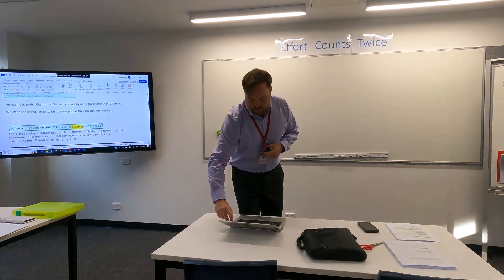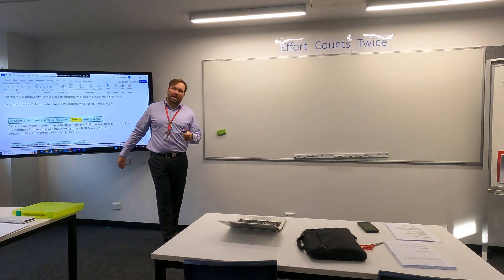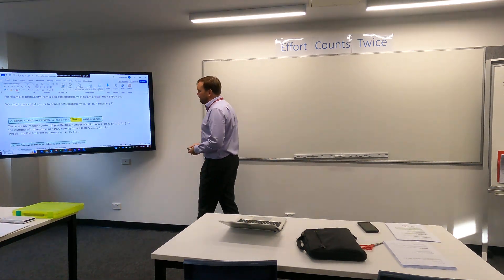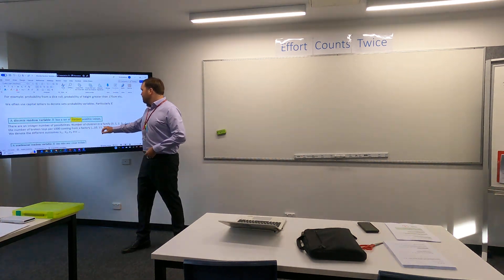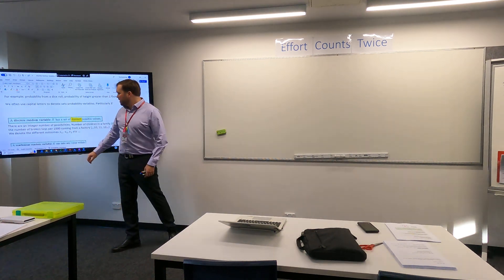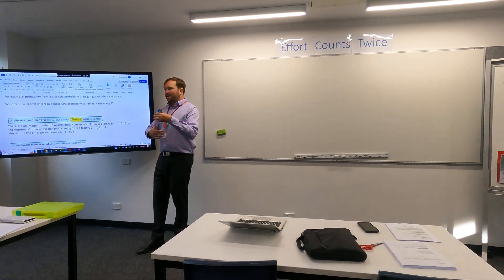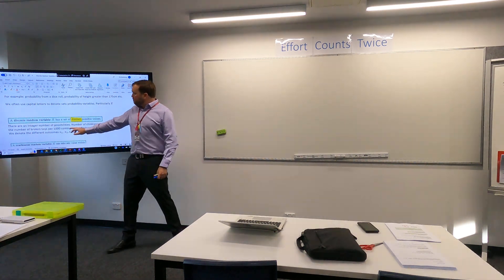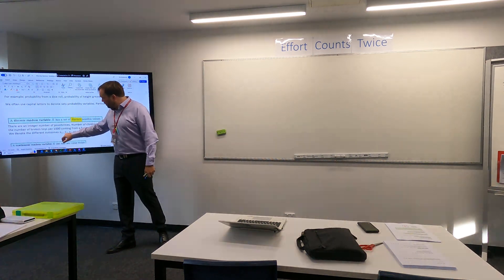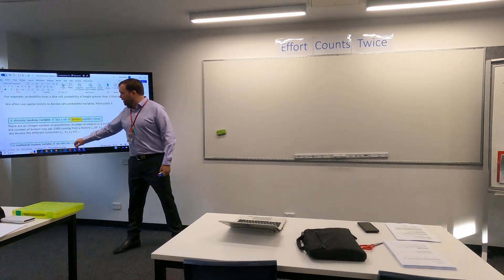We use the letter X to denote a distinct set of possible values. Distinct meaning there is not an infinite number of possibilities — there is a distinct number of possibilities. So that might be number of children in a family, it might be toys broken per thousand, it might be number of students in a classroom. You're looking at distinct whole numbers, and for the capital X denoting a set, we have different outcomes denoted by lowercase x's with subsets — outcome one, outcome two, outcome three.